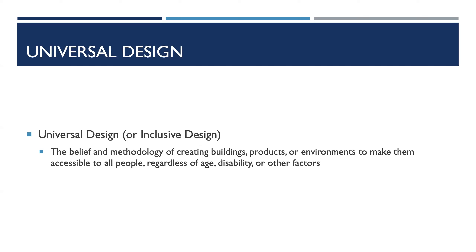Universal design — you may also know it as inclusive design — is a methodology for creating products and environments to be accessible to all people regardless of their sex, age, disability, or other factors. It's about creating accessibility and inclusivity from the ground up, ensuring that the design caters to the needs of the widest possible audience.